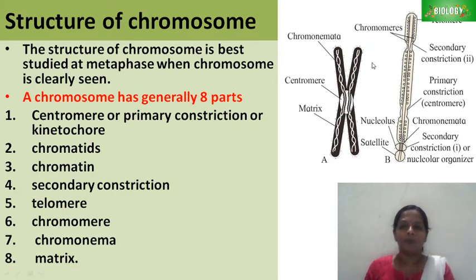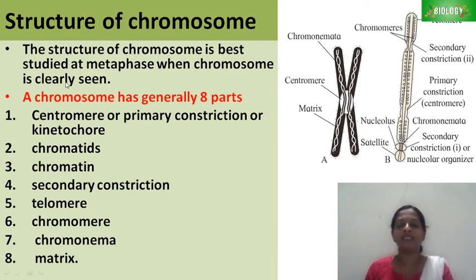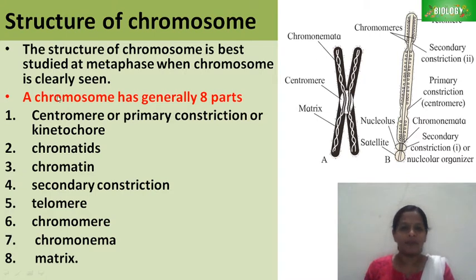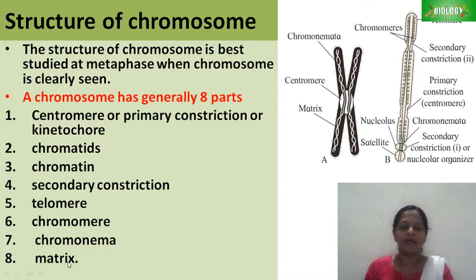Now let us see the structure of chromosome. The structure of chromosome is best studied at metaphase when the chromosome is clearly seen. A chromosome has generally eight parts: centromere, chromatids, chromatin, secondary constriction, telomere, chromomere, chromonema, and matrix.